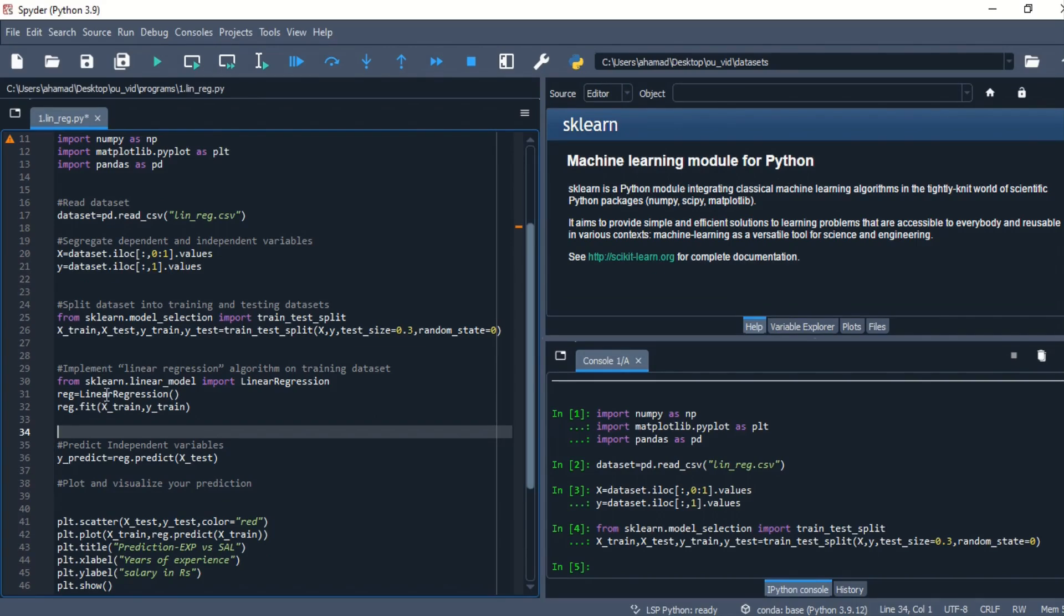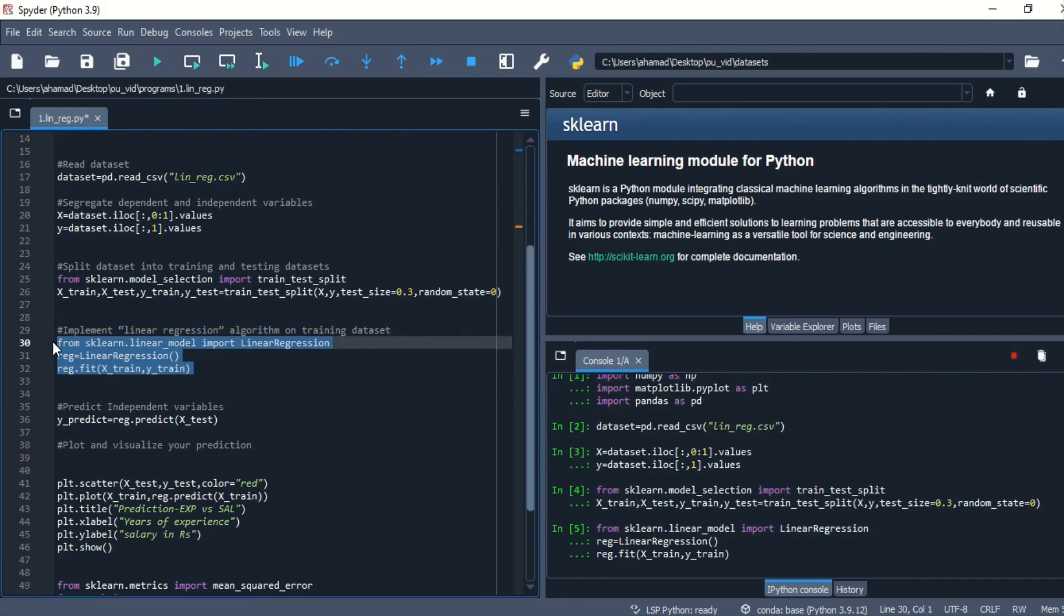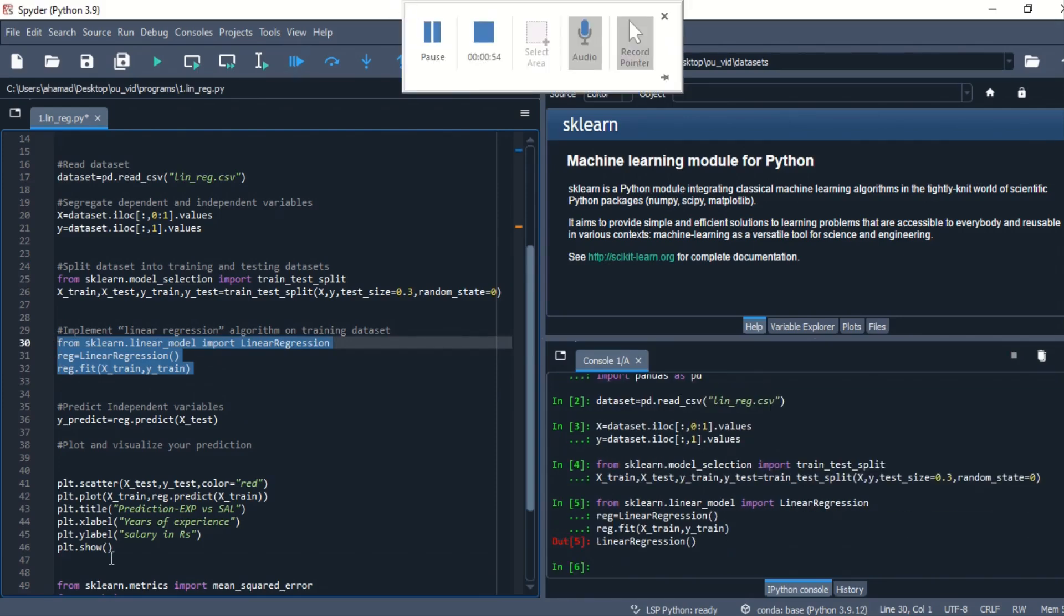Now here is the actual chunk of code for linear regression. Okay, now from scikit-learn library, I have included linear model module and I have imported linear regression class. After that, we have to create the object of the linear regression class and apply the fit function, where I have trained with the training dataset. If I execute this chunk of code, it has been executed successfully.